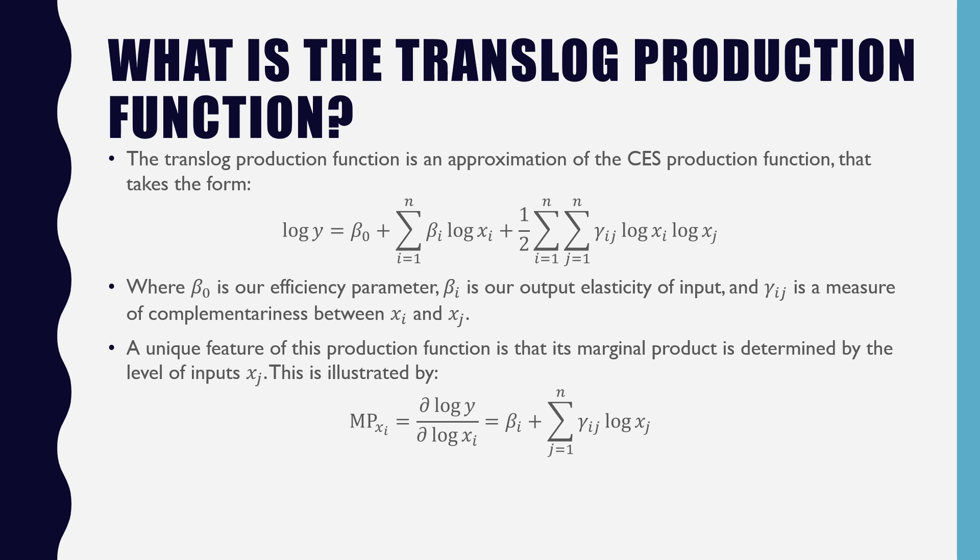Where beta 0 is our efficiency parameter, beta i is our output elasticity, and gamma ij is our measure of complementariness between our inputs xi and xj.